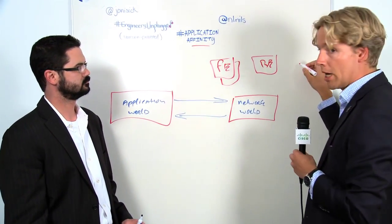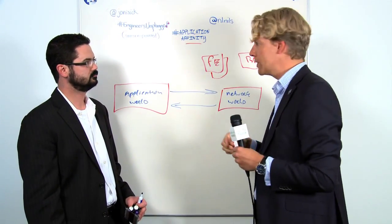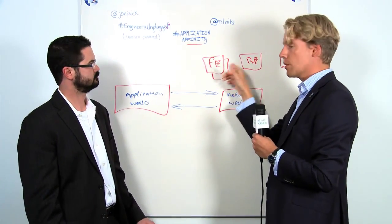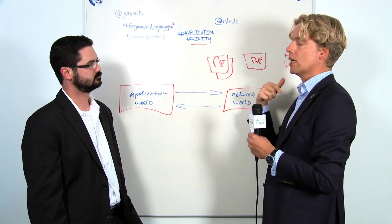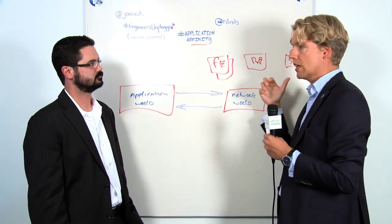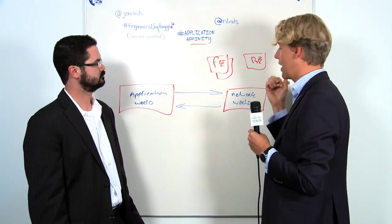and ultimately there might be a storage tier at the back here. And it's the relationship between these three where individually about this relationship we can say something about. For instance, front end to back end, we might be very conscious of latency. Whereas from back end to storage, because it's unencrypted data, we really perhaps want to isolate that traffic.